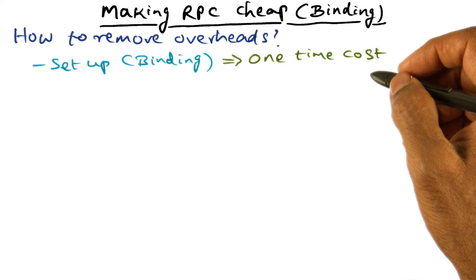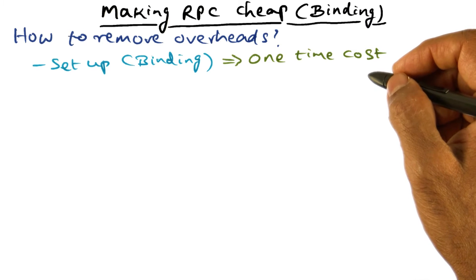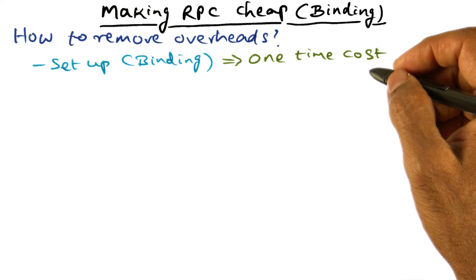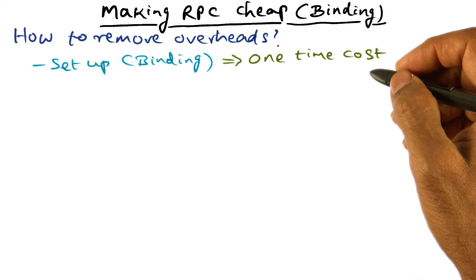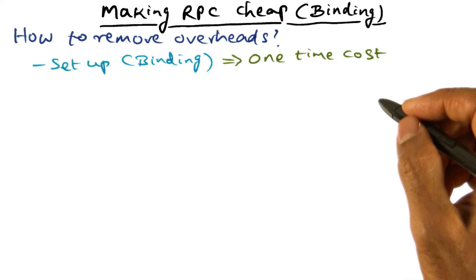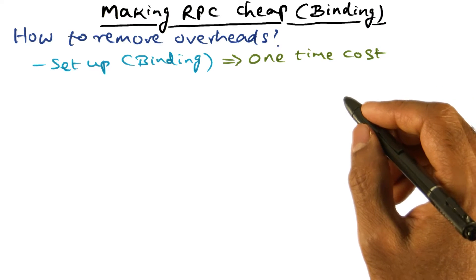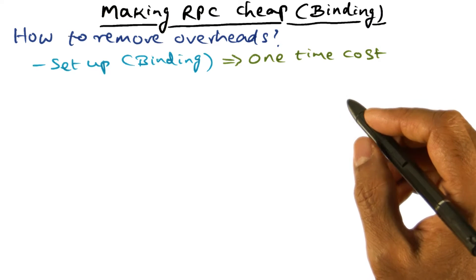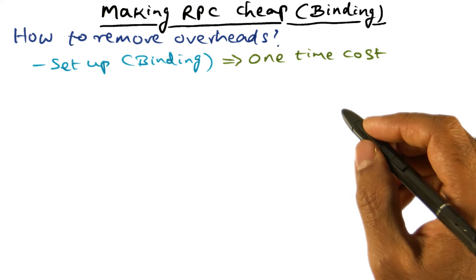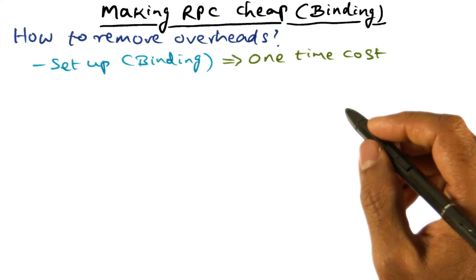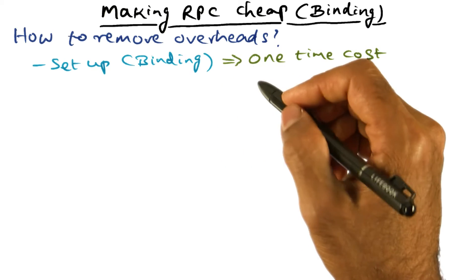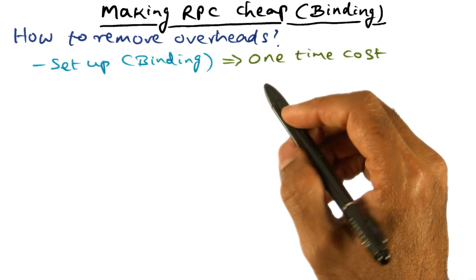These ideas should sound very familiar from the exokernel discussion: we don't want to focus on the cost of setting up, which is a one-time cost, but rather focus on the recurring cost, which is the actual calls that are being made. So now let's discuss in more detail how this binding works.